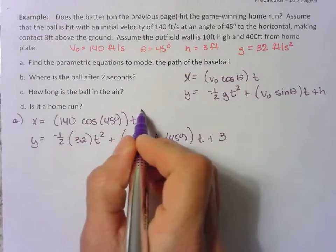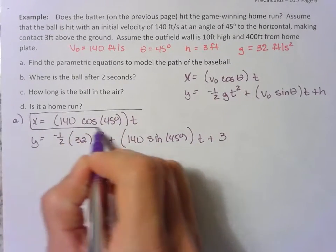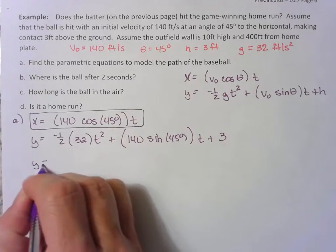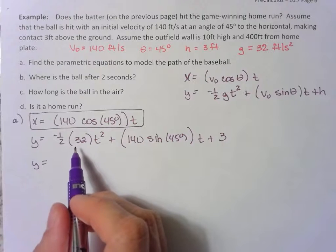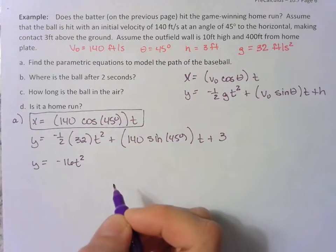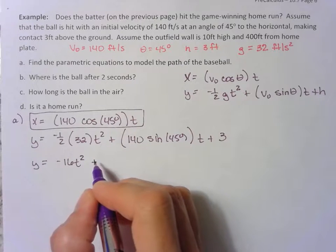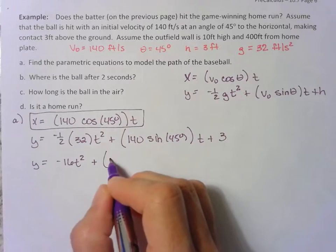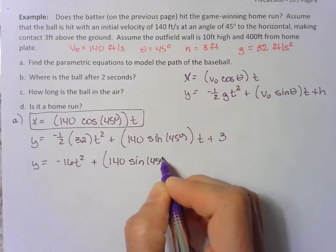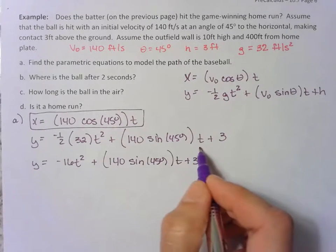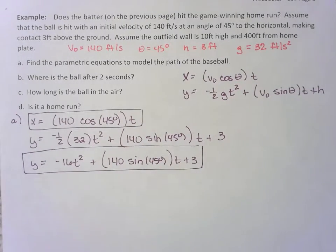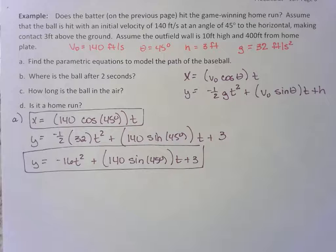So we have our x equation. We just need to simplify this one a little bit. So y is equal to negative one-half times 32 would be negative 16t squared plus all the rest of this stuff. So this is going to be the y part of our parametric equations. And that's all you have to do for part a.